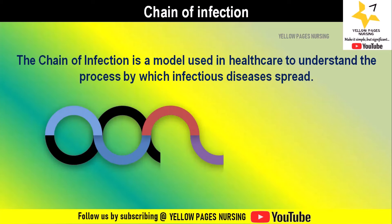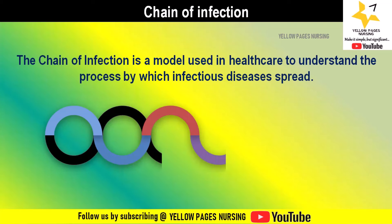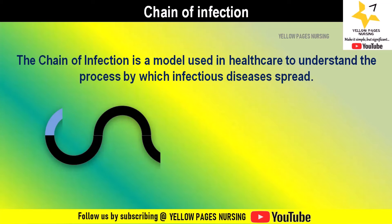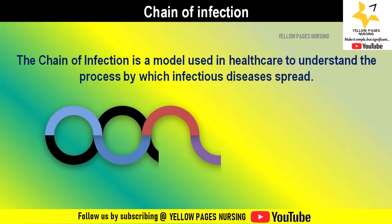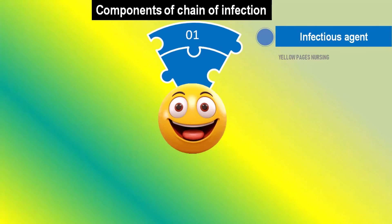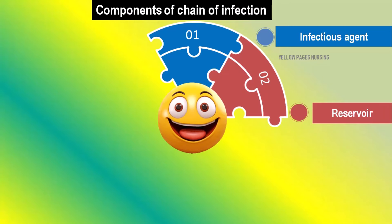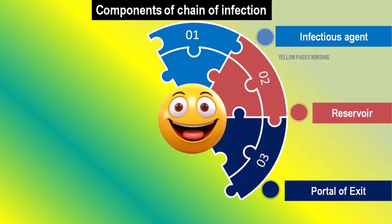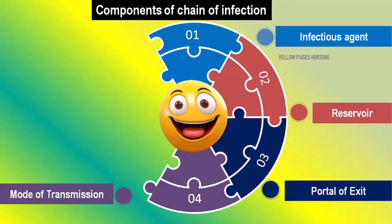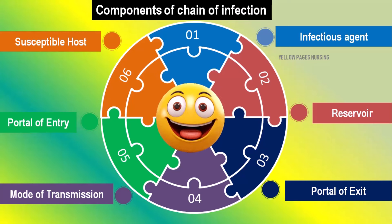It consists of a series of interconnected links, each representing a step in the transmission process. The components or links of the chain of infection include: the infectious agent or microorganism, reservoir or source, portal of exit, mode of transmission, portal of entry, and susceptible host. Understanding and breaking the chain of infection is essential for healthcare professionals to effectively control and prevent the spread of infectious diseases in healthcare settings and the community.